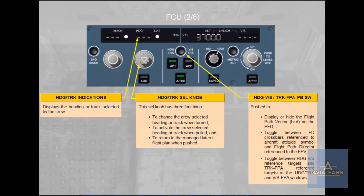The Heading Track Indications display the heading or track selected by the crew. The Heading Track Selector Knob — this selector knob has three functions.